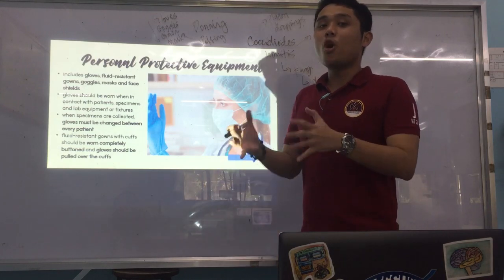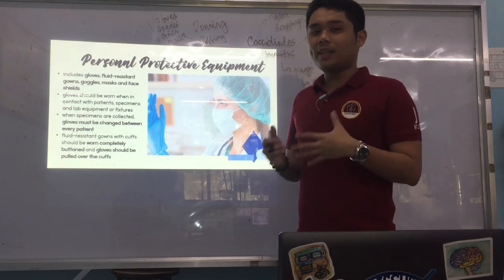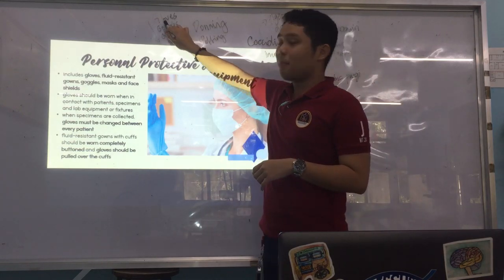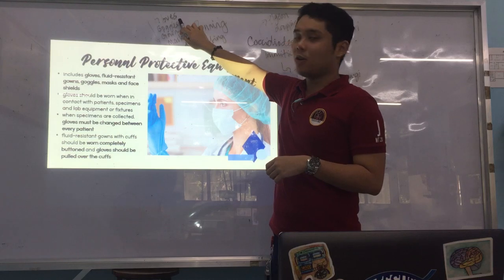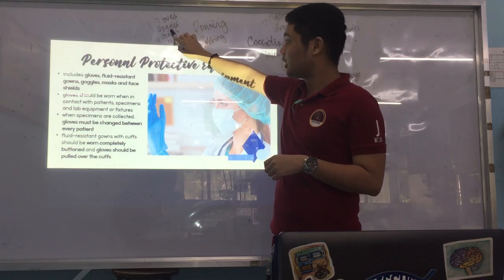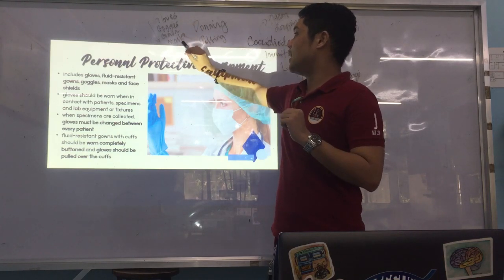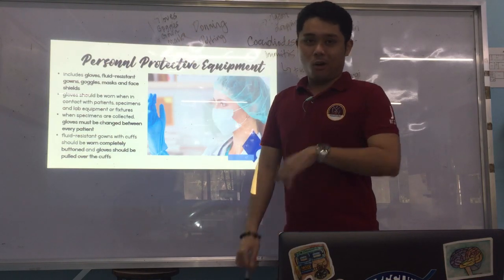For doffing — how to take off PPE — the order is alphabetical: you start with gloves, followed by goggles, then gown, and finally mask. The logic is that gloves are the most contaminated and should be removed first, and the mask — the most protective — is removed last.